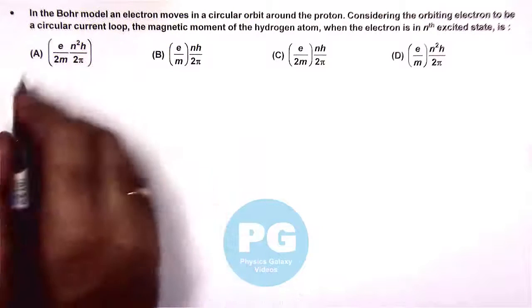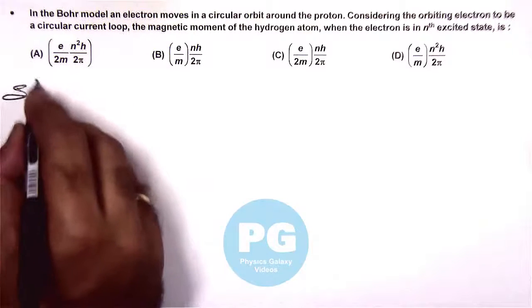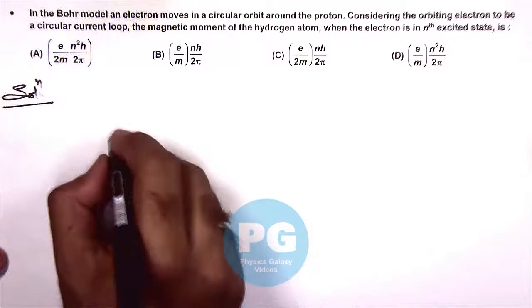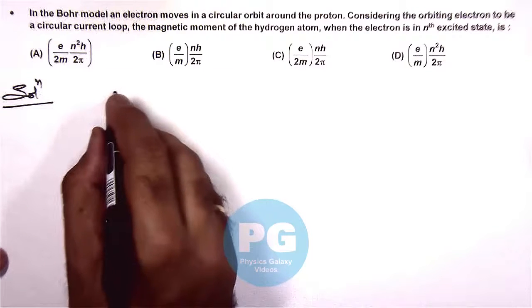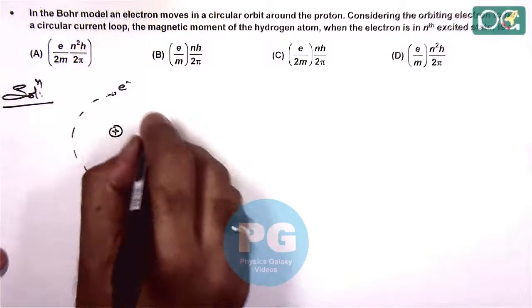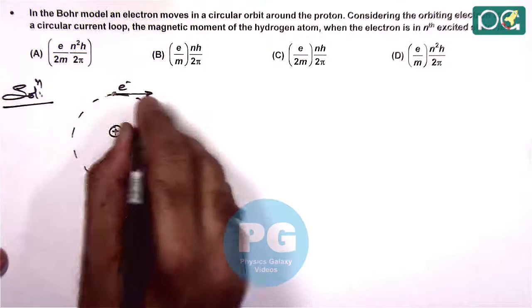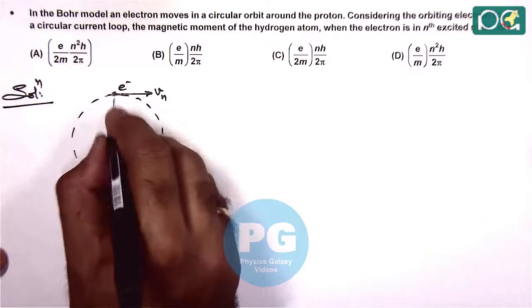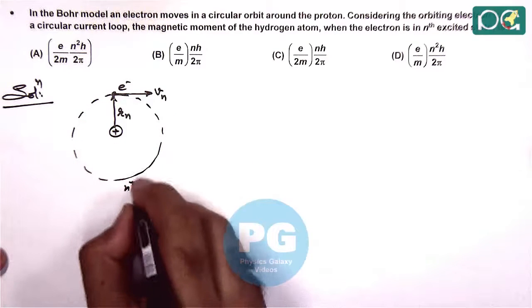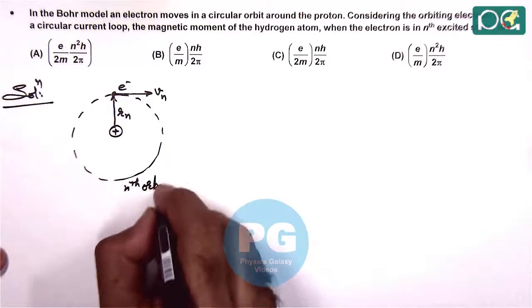The same logic we already covered in theory about the magnetic moment of electron in nth orbit. Here we can analyze once again if there is a nucleus around which an electron is considered to be moving in a circular path with velocity vn and the radius of this orbit is rn. We are considering nth orbit of electron.